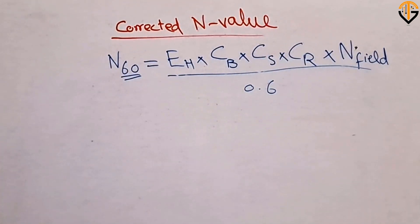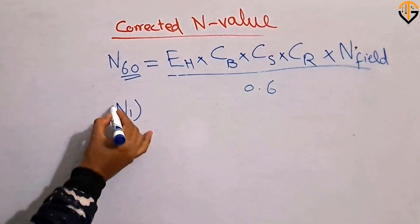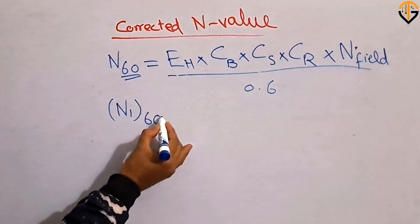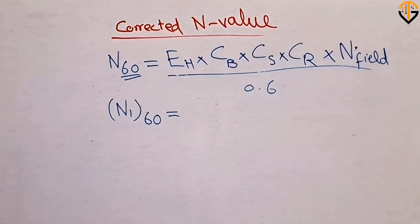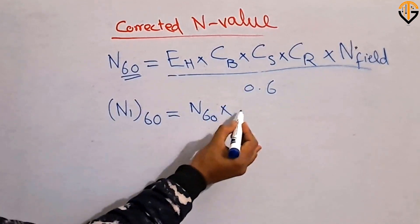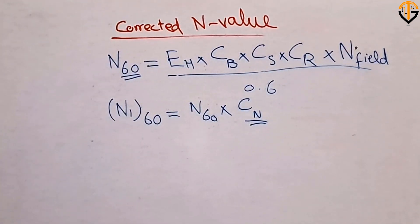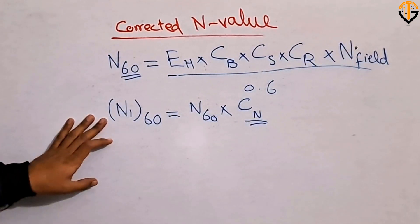This is how we find out N₆₀. There is also another correction for overburden. If the overburden correction is applied, this corrected value becomes N₁₆₀, which equals N₆₀ multiplied by C_N. C_N is the correction factor for overburden.